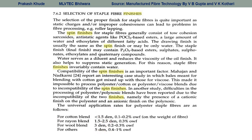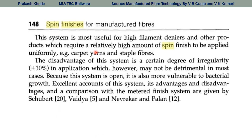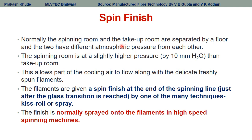In spin finish applications, the spinning room and take-up room are separated by a floor, with a difference in atmospheric pressures — the spinning room is at slightly higher pressure than the take-up room. This allows cooling air to flow along the delicate yarns. Spin finish can be applied by different techniques — a kiss roll or spray. The finish is normally sprayed under the filament in high-speed spinning machines.